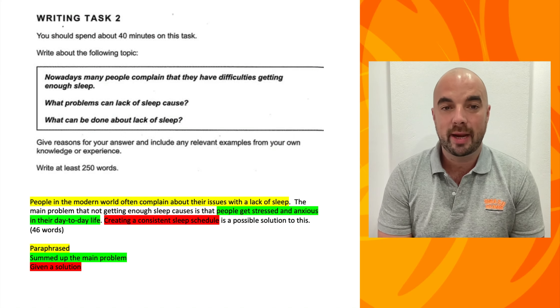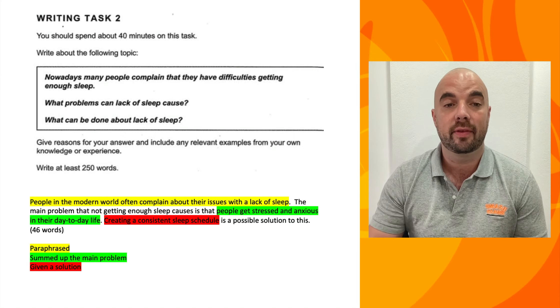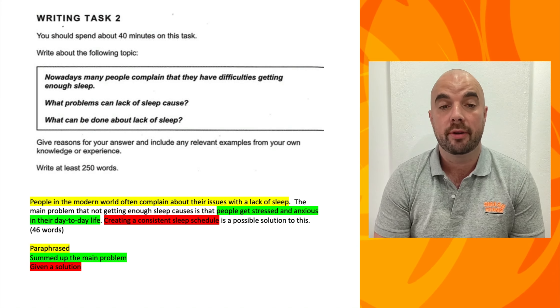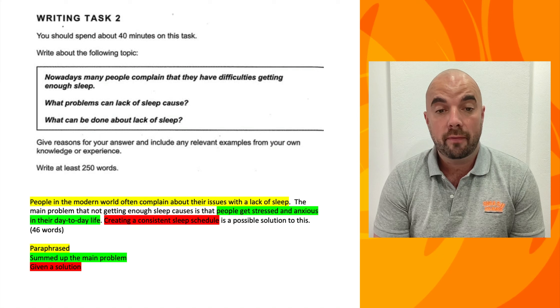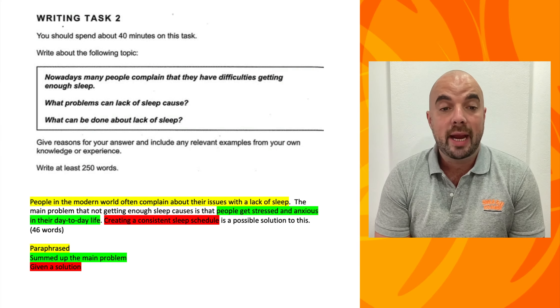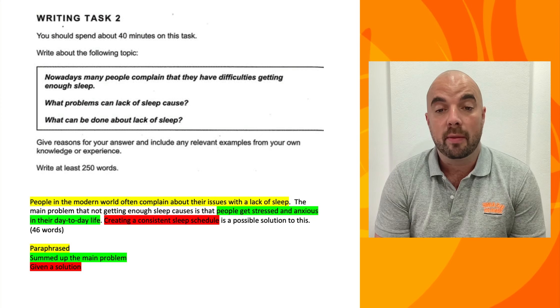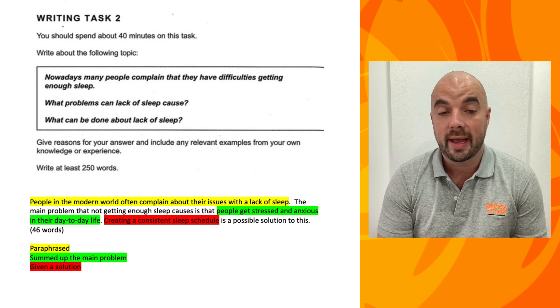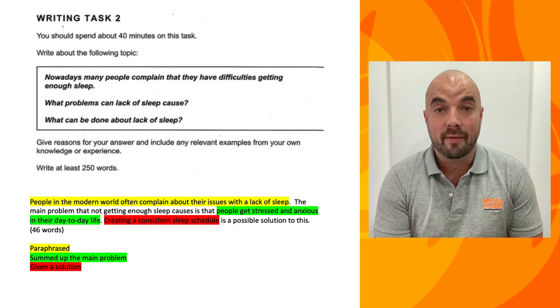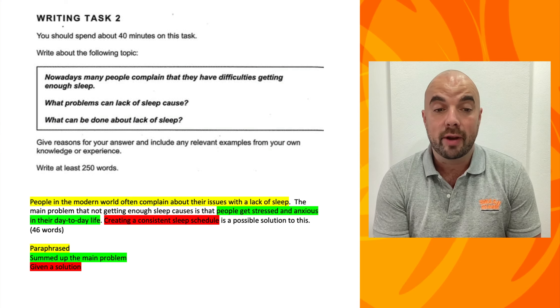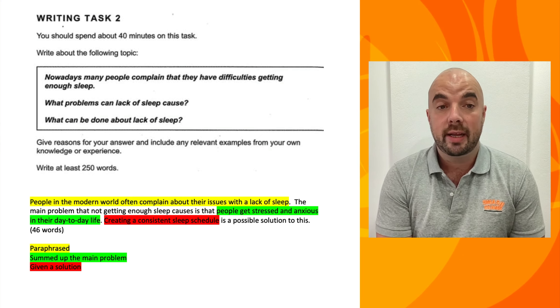I'm now going to show you three more examples to show you that this technique really works. Here is a problem solution essay that says: 'Nowadays many people complain that they have difficulties getting enough sleep. What problems can a lack of sleep cause and what can be done about the lack of sleep?' I first paraphrase the statement: 'People in the modern world often complain about their issues with a lack of sleep.' The main problem is that not getting enough sleep causes people to get stressed and anxious in their day-to-day life. Creating a consistent sleep schedule is a possible solution. I've color-coded this: yellow is the paraphrase, green is the summary of the main problem, and red is the solution.